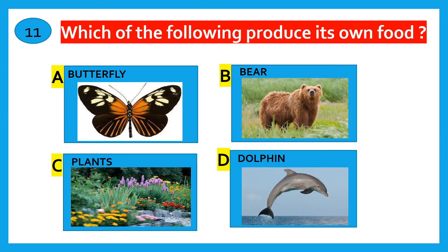Which of the following produces its own food? Butterfly, bear, plants, dolphin? The correct answer is plants.